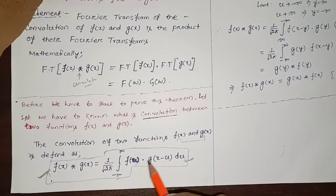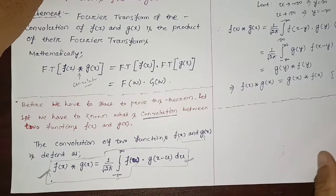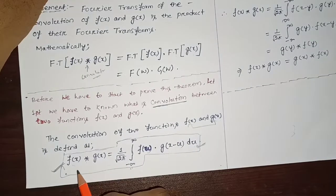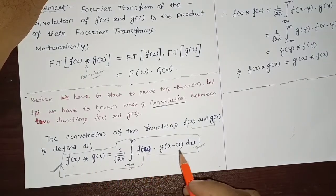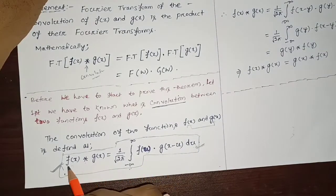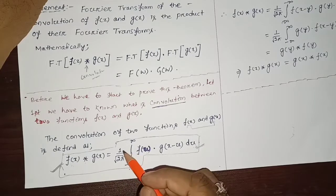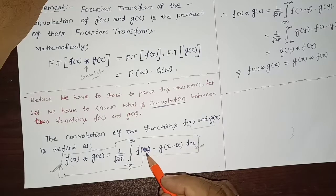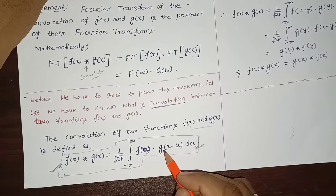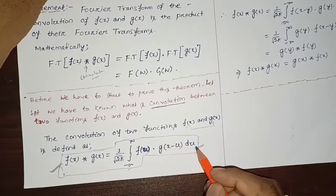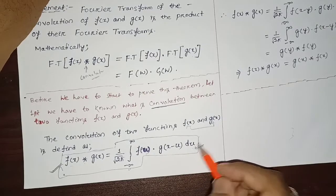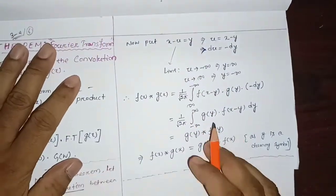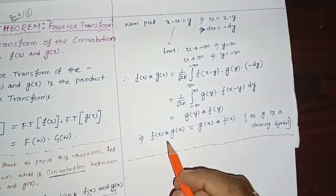This is the mathematical form of convolution between the two functions. The proof can be found in your mathematics honors syllabus. Here we just consider the expression: convolution between the two functions equals (1/√(2π)) ∫ from minus infinity to plus infinity of f(u)·g(x−u) du.